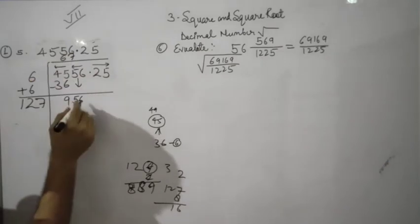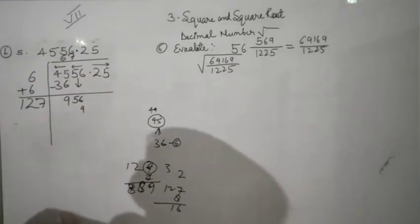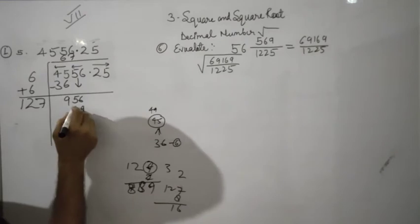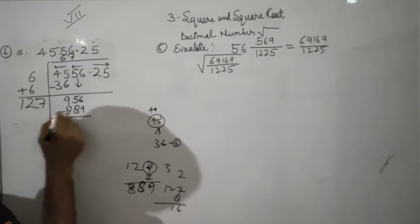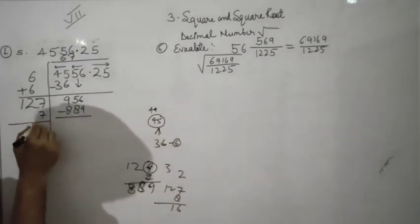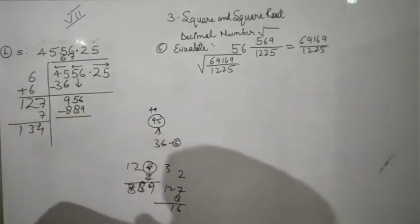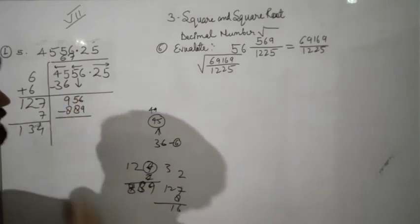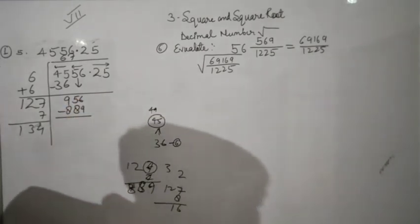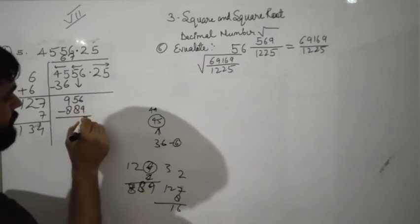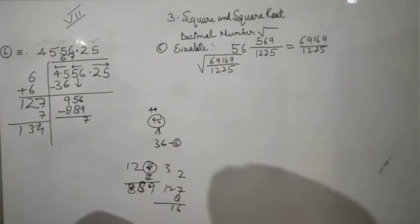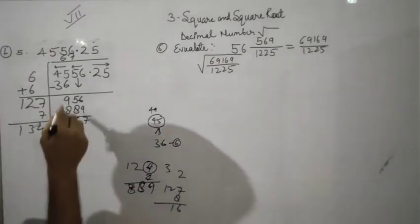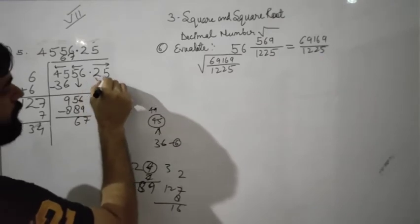After subtraction we get remainder 67. Now bring down the decimal pair 25. We get 6725. Now find which number works: 5 will work here. 1345×5 equals 6725. Subtract and we get 0.